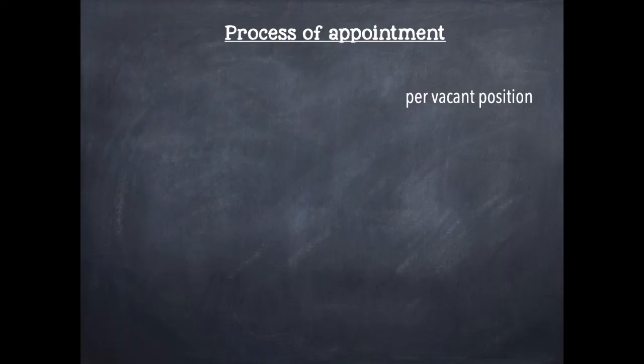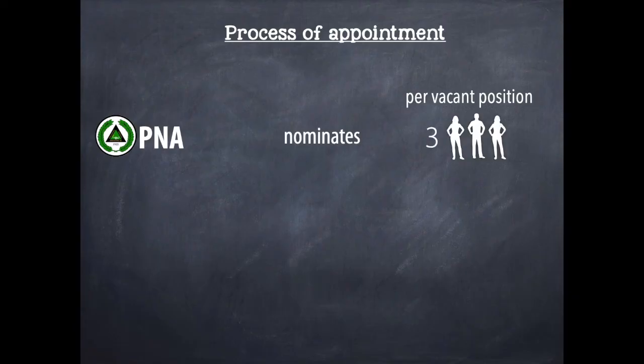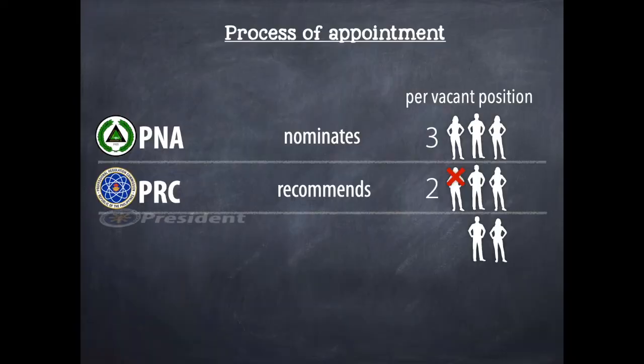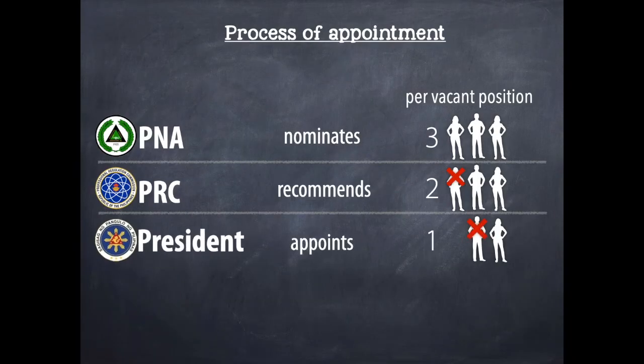Now let me discuss to you the correct process of appointment of a BON member. So per vacant position, it is the PNA who will nominate 3 of its most qualified members. And this list will be then submitted to the PRC. And it is now the PRC who will recommend 2 out of the 3 nominees from the PNA. Lastly, it is the President who will appoint 1 out of the 2 recommendees from the PRC.